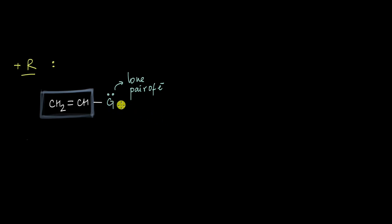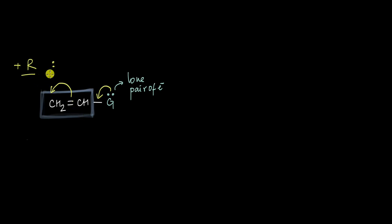We have seen that anything that has a lone pair of electrons can push this lone pair into a pi system, and in this way it can increase the electron density of these kinds of pi systems. These are what we call the plus-R groups.